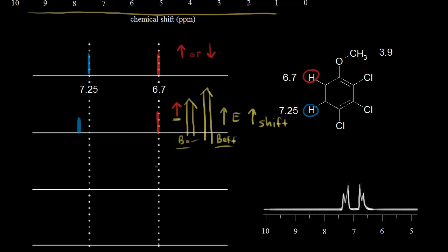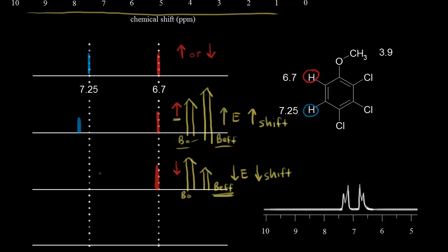Now let's think about the red proton's magnetic moment aligned against the applied magnetic field. The magnetic field of the red proton is going down — opposite to the applied magnetic field. So the red proton's magnetic field cancels out some of that external field, and the proton in blue feels a smaller effective magnetic field. That decreases the energy difference between the alpha and beta spin states. Therefore you get a lower frequency signal and a lower value for the chemical shift than expected — a lower value for the chemical shift for the blue proton.